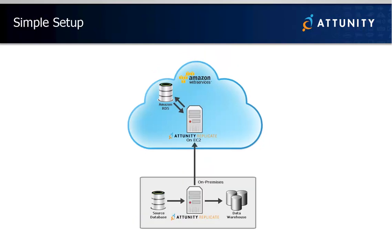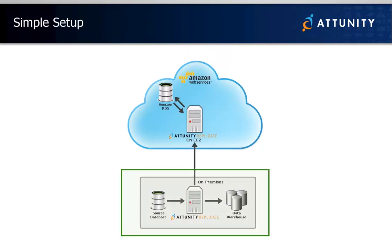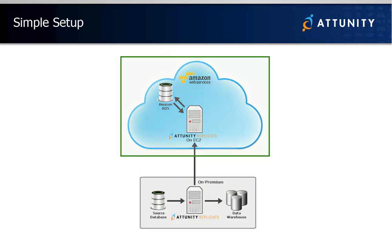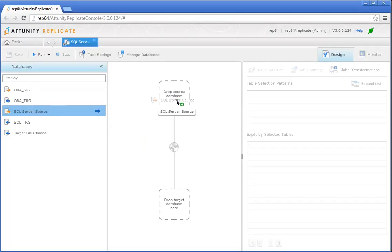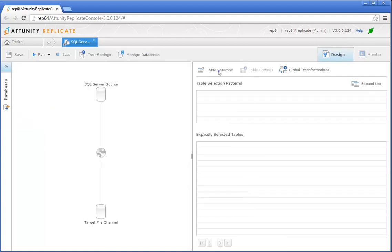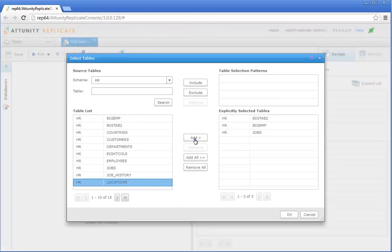So how does it work? One Attunity Replicate is installed on-premises alongside the source database, while another Attunity Replicate is installed on an EC2 machine in the same region as your RDS instance. Following a simple setup, and thanks to Replicate's drag-and-drop interface, you'll be streaming your data to Amazon RDS in no time.